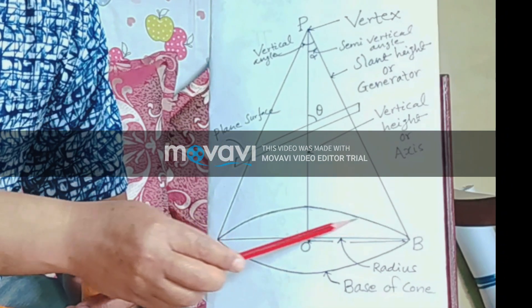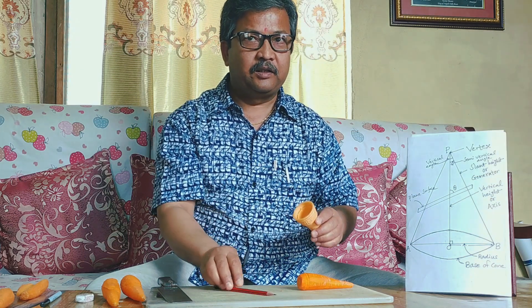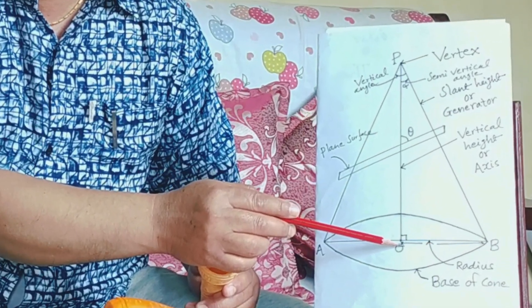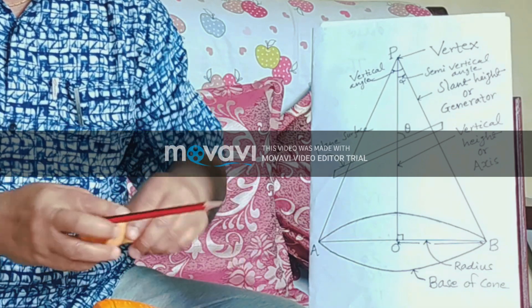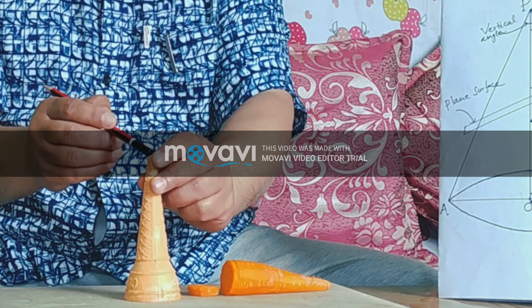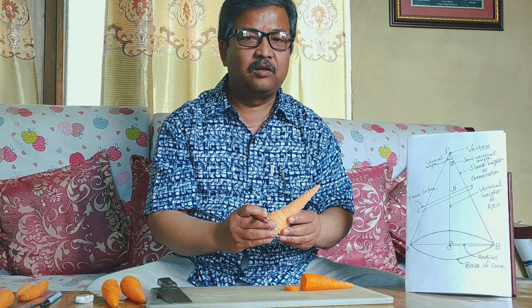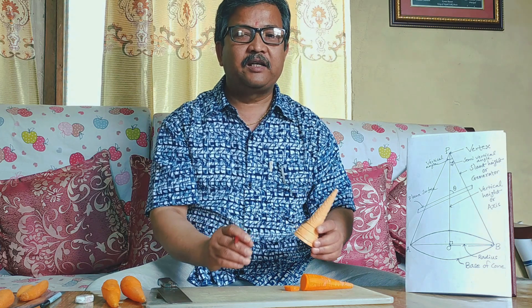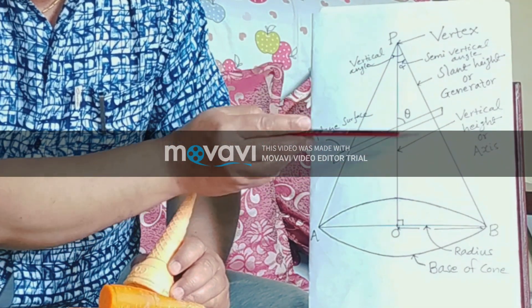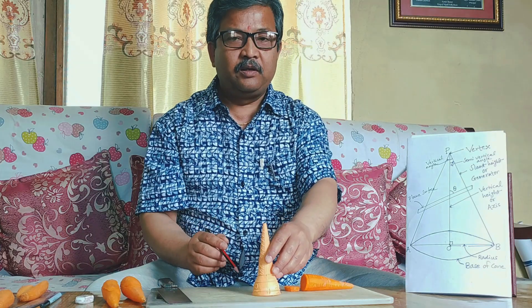Look at the figure — this is the base of the cone, which is in circular form. This circle has a center; here O is the center of the circle, that is, the center of the base of the cone. The cone has another part at the top — that is the vertex of the cone. When the vertex and the center of the base are joined, we get a straight line, which is called the vertical height or the axis of the cone, as shown in the figure.